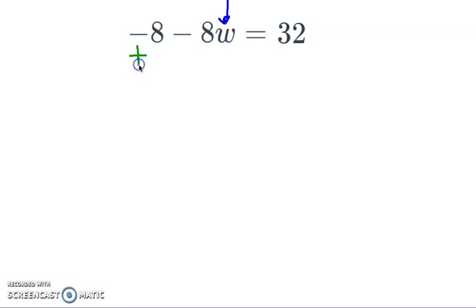There's some room here. I'm going to add 8 to negative 8. And that's going to make it 0. Negative 8 plus 8 is 0. But you're not going to let me get away with adding 8 to one side without adding it to the other. So here I go. Here, 32 plus 8 is 40.